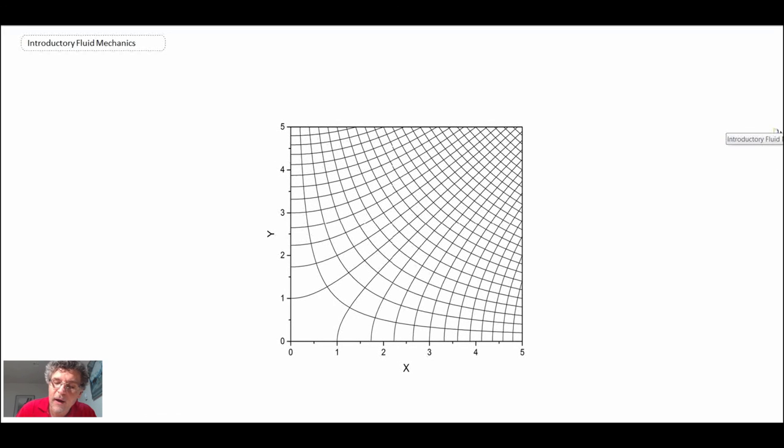And certainly they are. So there you can see an overlay of the stream function and the potential function. And sure enough, the lines are mutually orthogonal or perpendicular to one another.